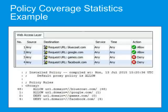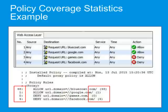In this example, the number on the left indicates the number of times that rule matched a user request. The number on the right in parentheses indicates the number of times the condition in the rule has matched a user request.